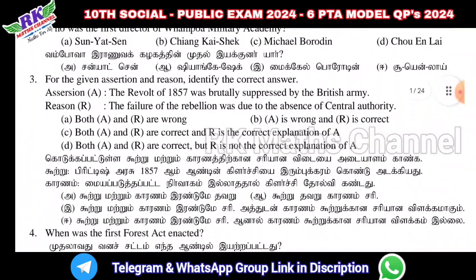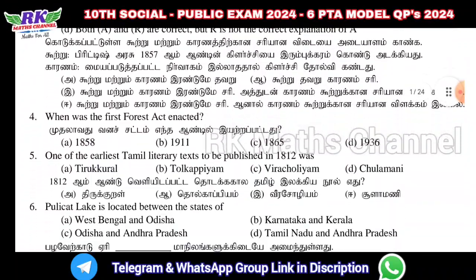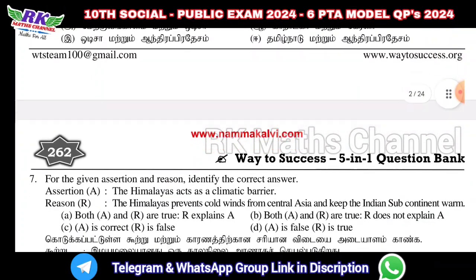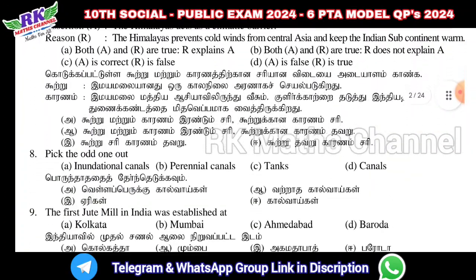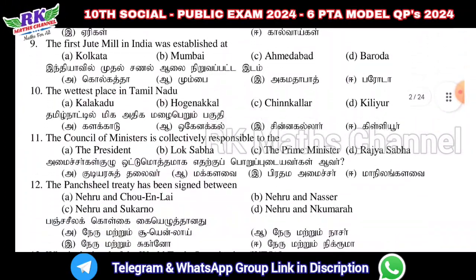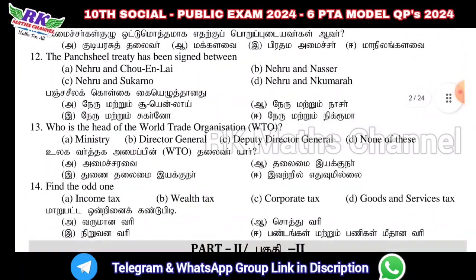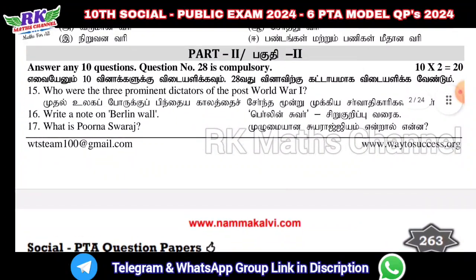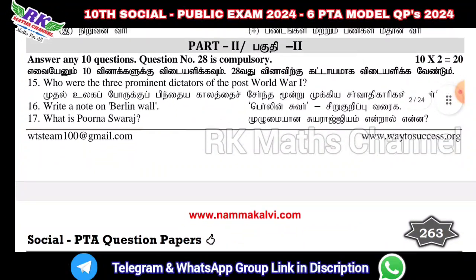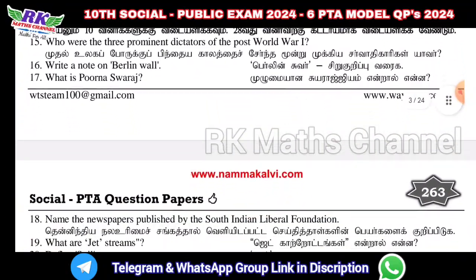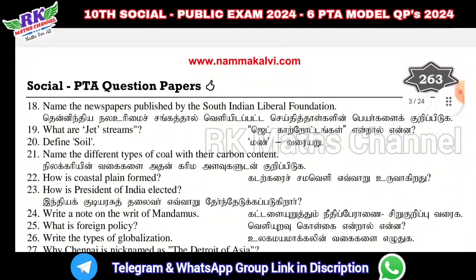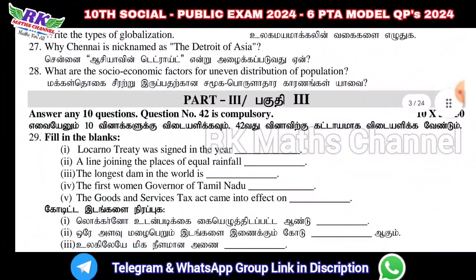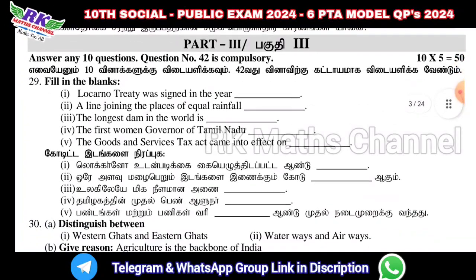In the first model question paper, Part 1 has 14 one-mark questions. In Part 2, there are 14 questions given, out of which 10 questions need to be answered. Question number 28 is the compulsory question — the same model applies here.